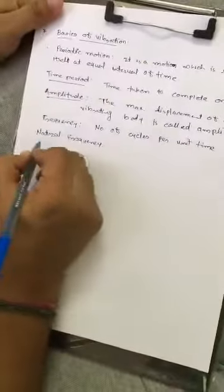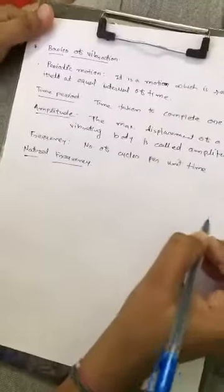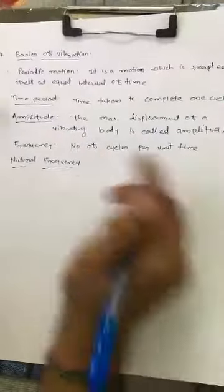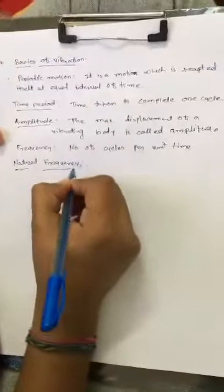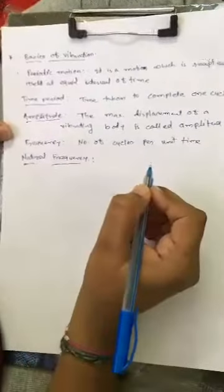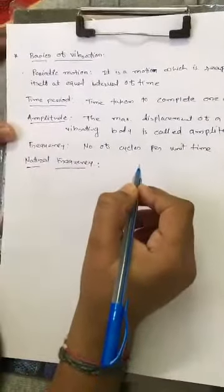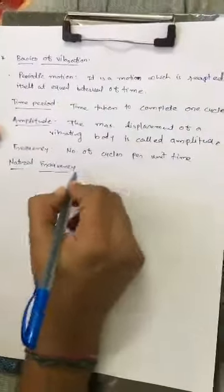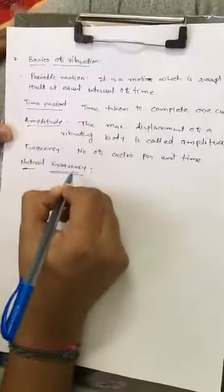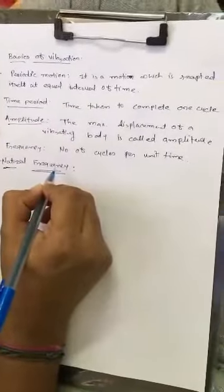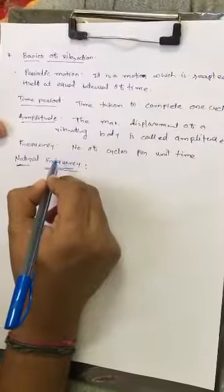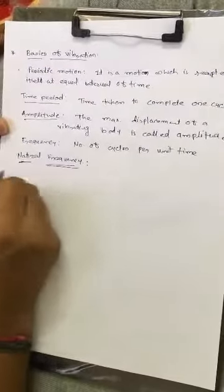Natural frequency is defined as follows: vibration can be classified as free vibration or forced vibration. In free vibration, only one time an external excitation force is applied to the body; after that it oscillates itself. That type of frequency of a vibratory body is called the natural frequency — it means the external excitation force is applied only one time.